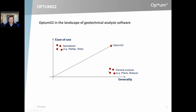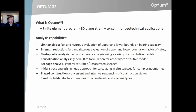The idea with Optum G2 is to have a program that scores high on both axes. In terms of generality, it's similar to Plaxis — there are certain things Plaxis can do that Optum G2 can't, and vice versa — but it's fairly general. In terms of ease of use, it also really scores quite high. I think you won't be convinced of this until you actually start using the program, so we can return to this slide at the end of the course and discuss it in more detail.